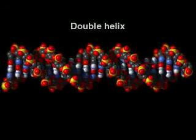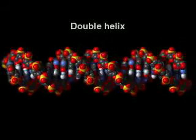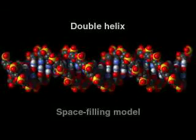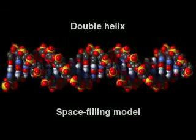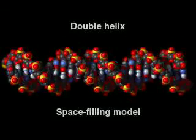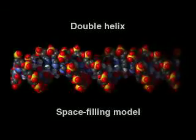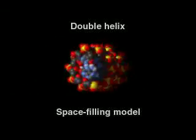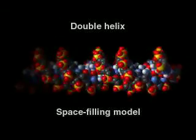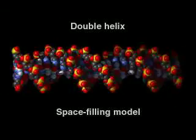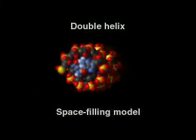DNA consists of two complementary strands of nucleotides twisted together to form a double helix. In this model, each atom is represented by a small sphere.